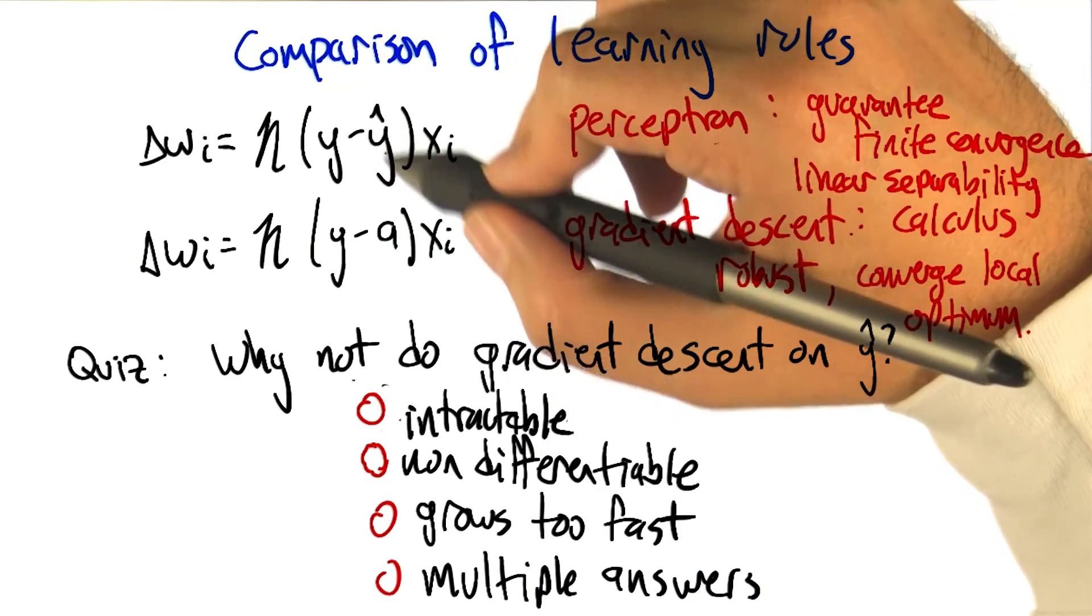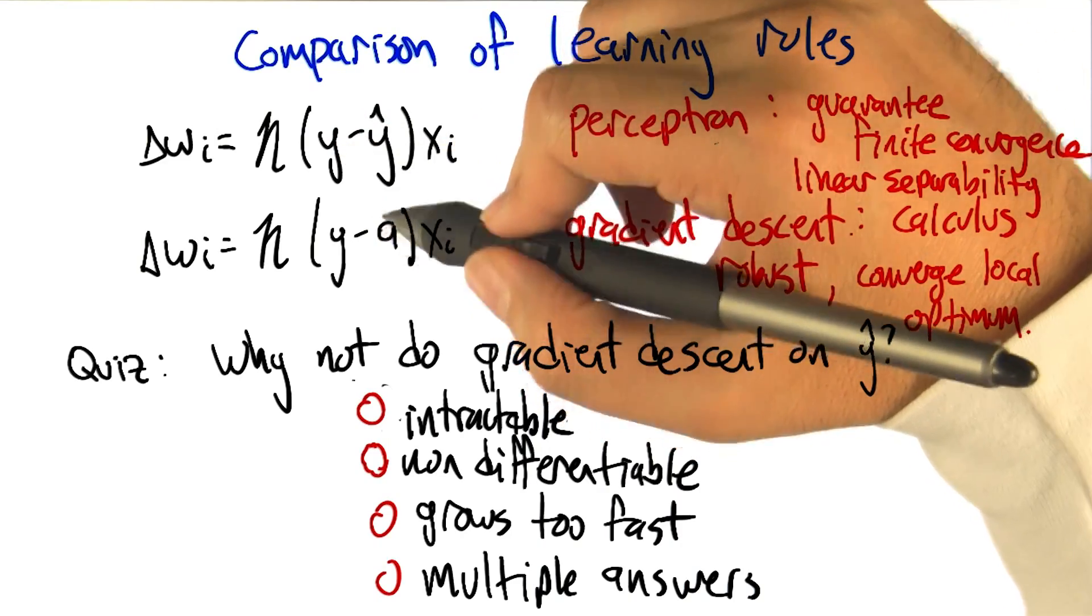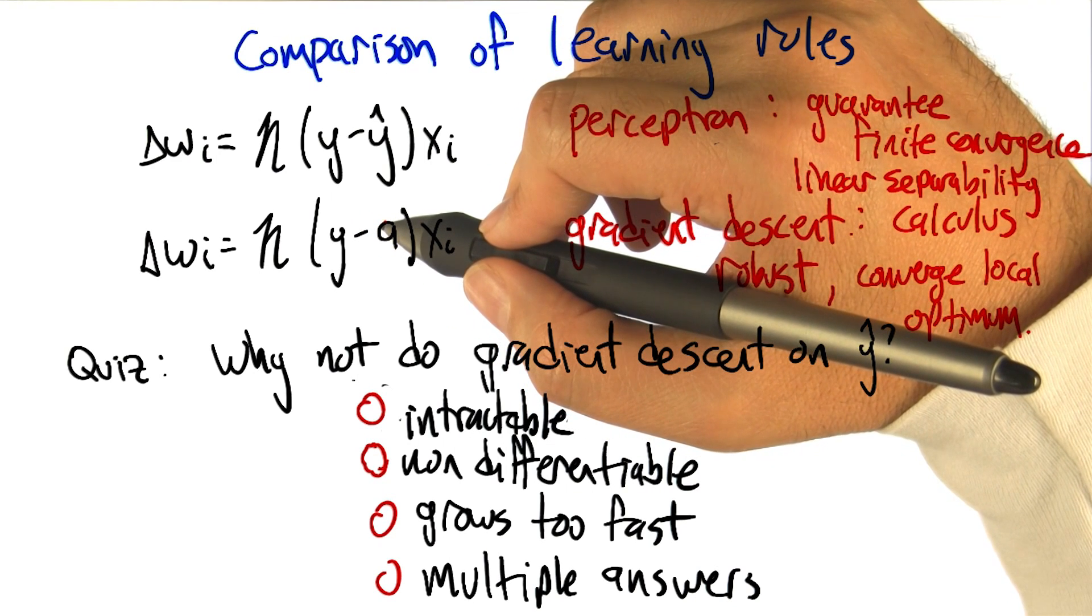Because y hat is the thing that we really want to match the output. We don't really want the activation to match the output. There's no need for that.